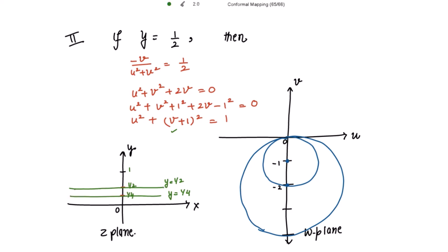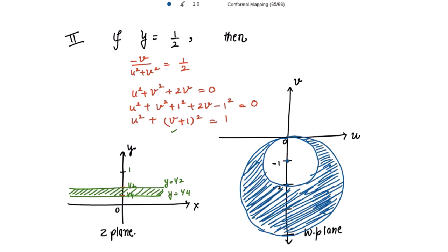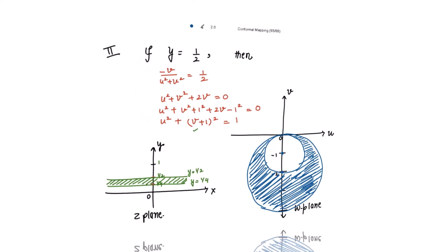The region between the lines y = 1/2 and y = 1/4 is mapped to the region between these two circles. Hence, the infinite strip 1/4 ≤ y ≤ 1/2 is transformed into the region between these two circles in the w-plane. This is the required region. Thank you.